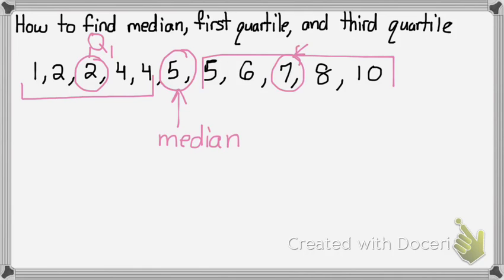So seven is now my third quartile. And that's how you find the median, first quartile, and third quartile given a set of data.